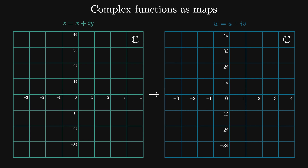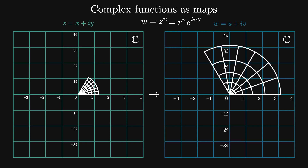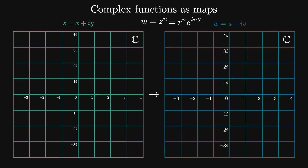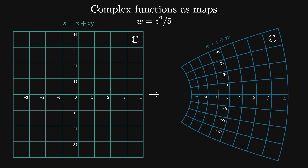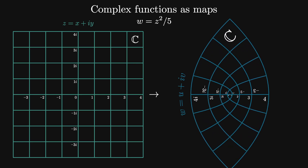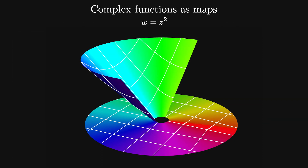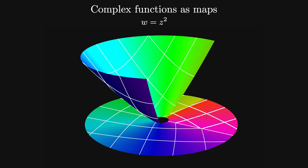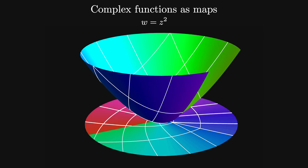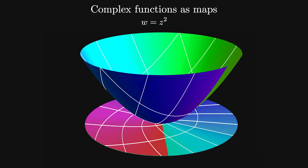We can use this to think about what happens when our map is some power z to the n equals r to the n times e to the i·n·theta. In general, this stretches the radial coordinate by r to the n and the theta coordinate by n times theta. We shouldn't think of these maps as just acting on an object in the w plane — we should think of this as a transformation of the whole plane. Here's an example for z goes to z squared divided by 5. This creates a double cover of the complex plane. Note that both points 1 and minus 1 get mapped to 1. There is another version illustrated in 3D, where the height maps the magnitude of the transformation at different points and the color is the argument of the domain. You can see that the disk wraps over itself twice.